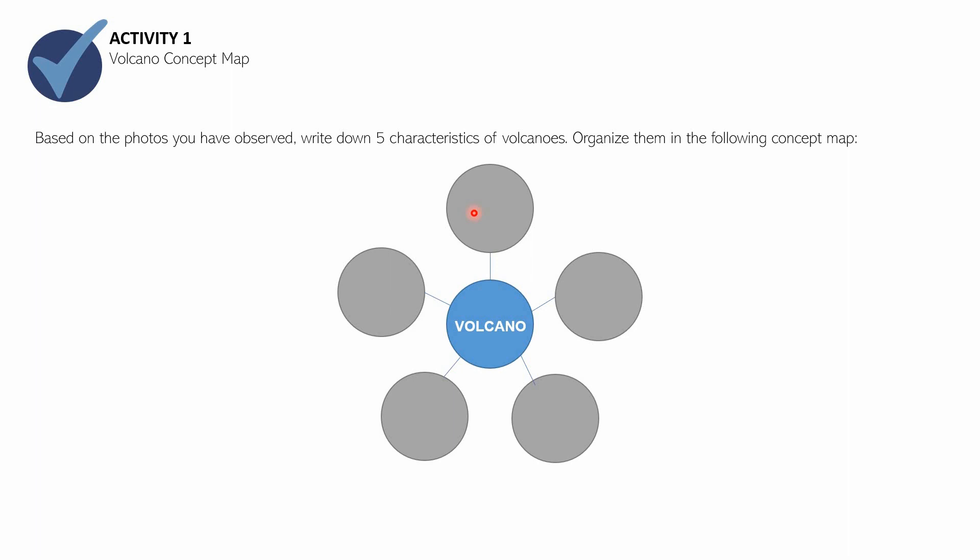Are you done with your concept map? If you are, let us proceed with the next part of this session. We're through with Activity One — Volcano Concept Map. If you are my student, I would like you to upload a copy of your concept map in Edmodo. I hope that you already expressed yourself in this activity — you can be creative. Let us proceed with the second part, which is a discussion about active and inactive volcanoes.